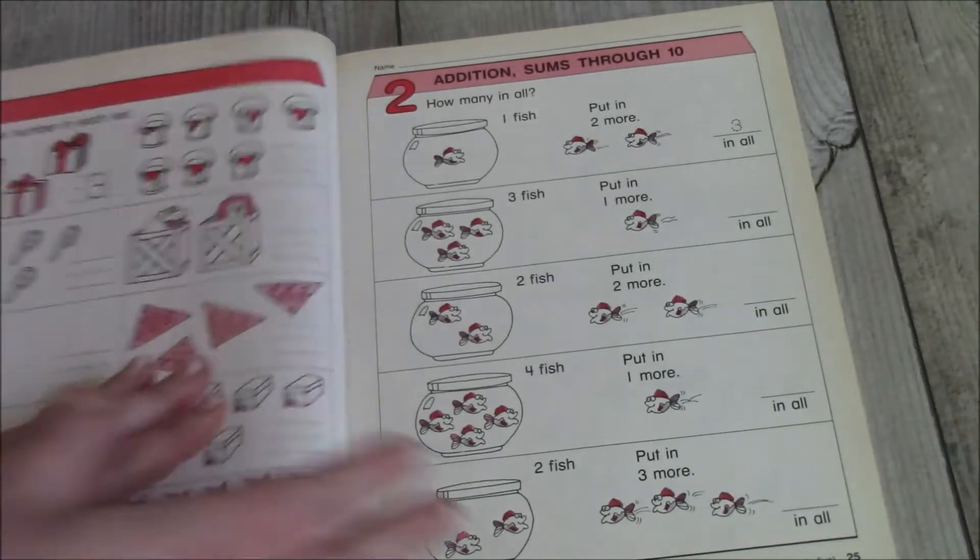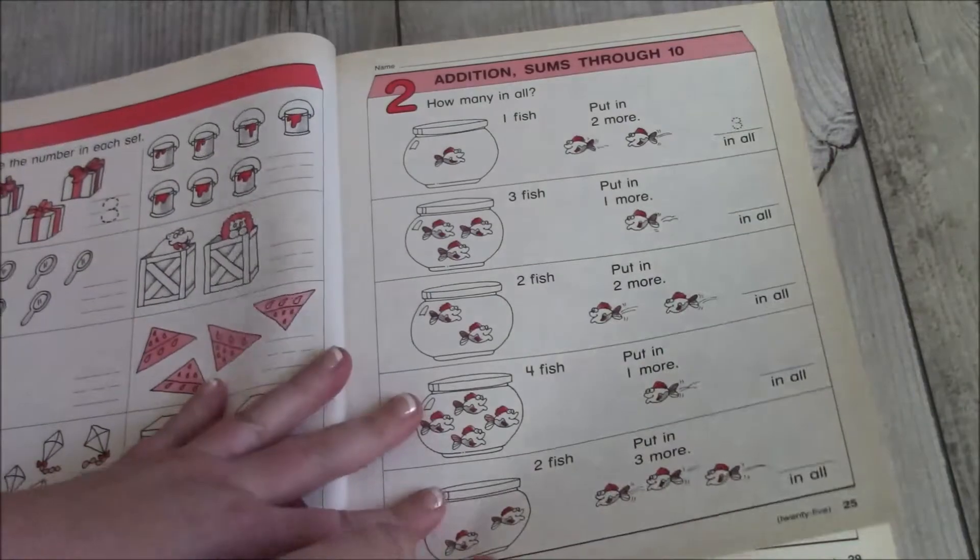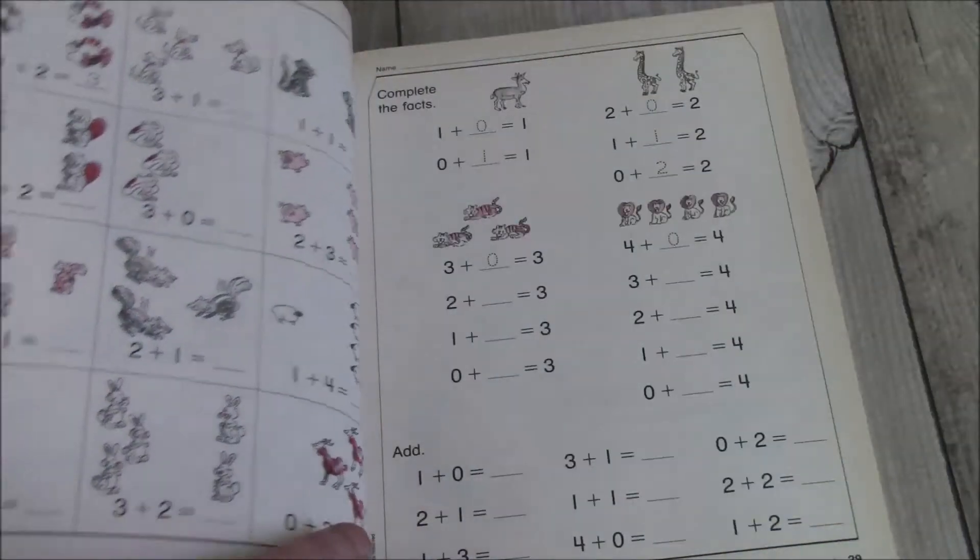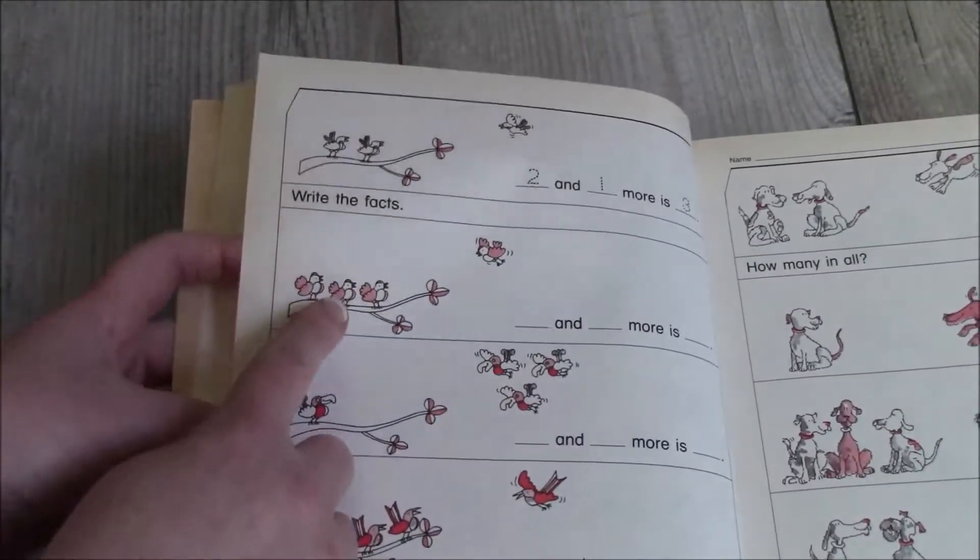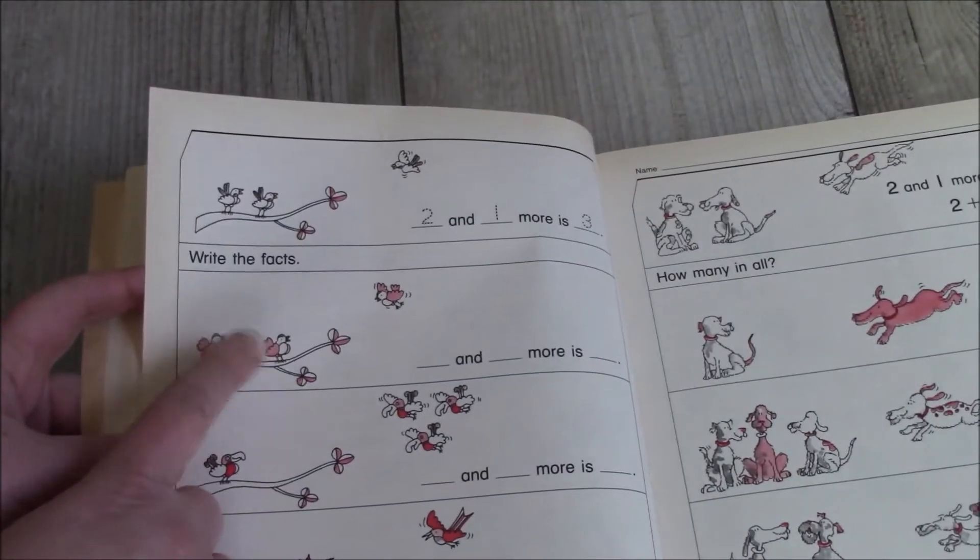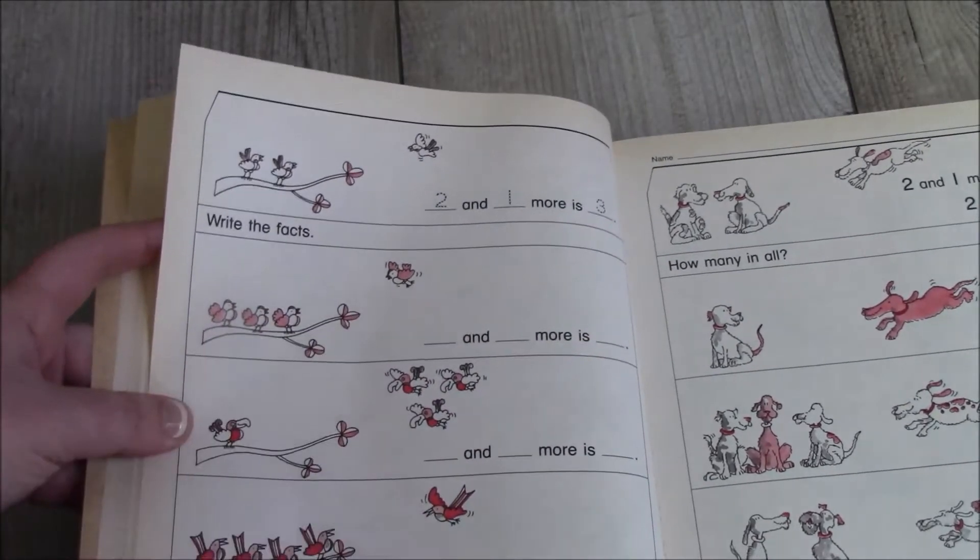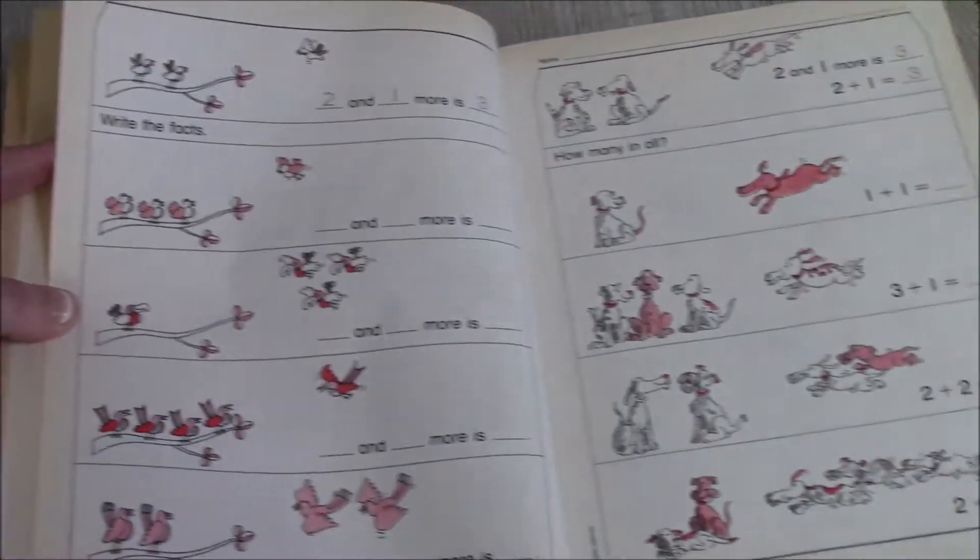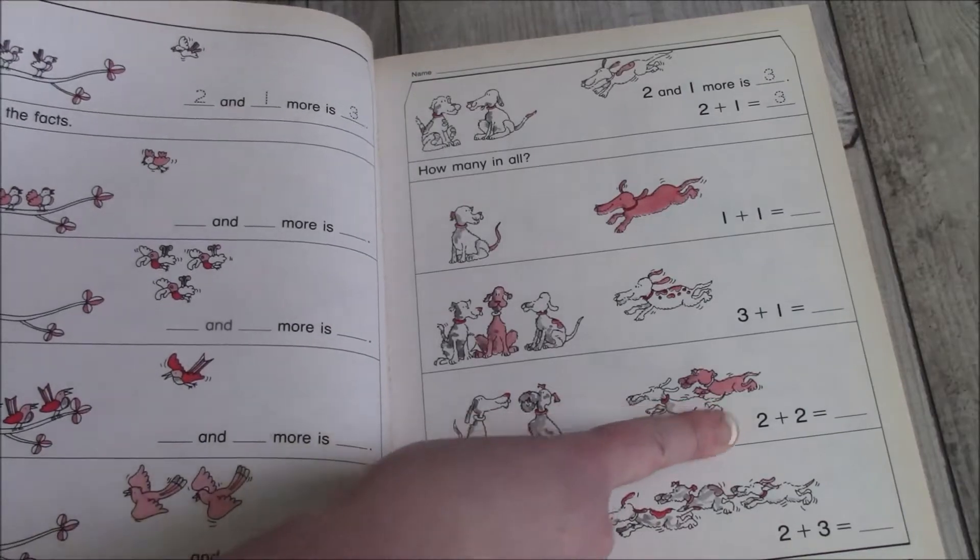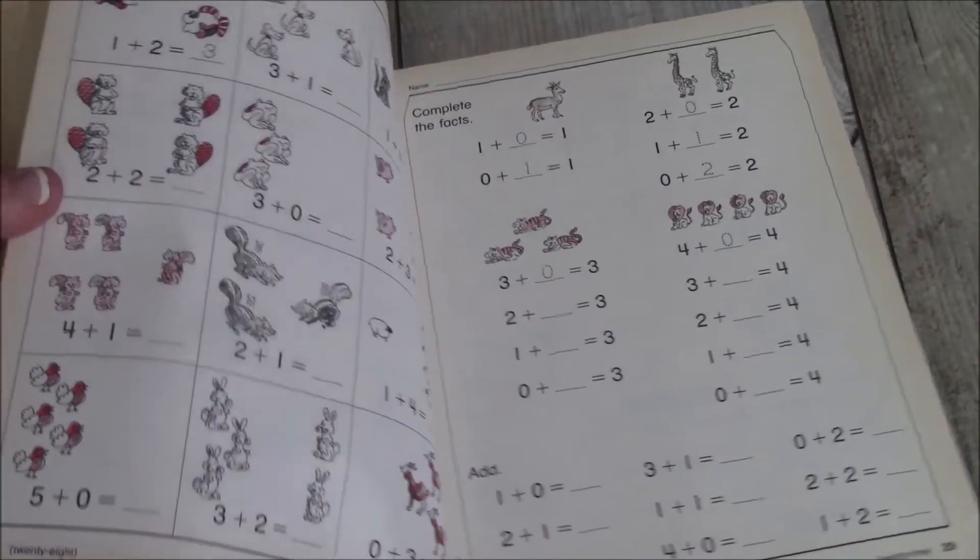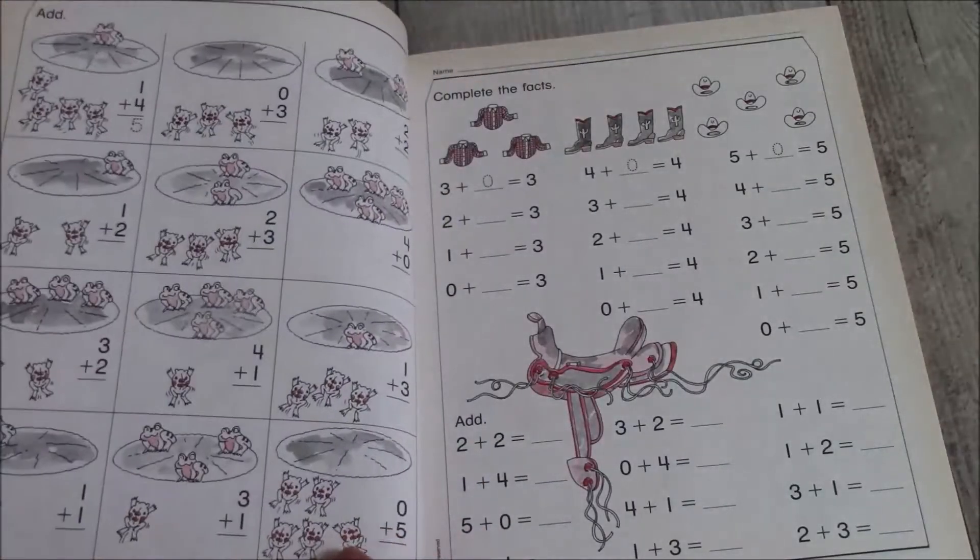So each chapter has, I believe, 24 pages. So this one is chapter two. We're going to go through sums and we kind of start with, you know, how many? One, two, three, and one more is four. And you're going to kind of work through that through both sides and it kind of grows. So then you're now going to figure out the plus sign and whatever. And it just gets more and more detailed.